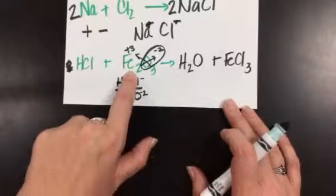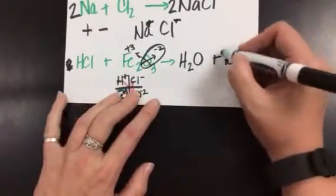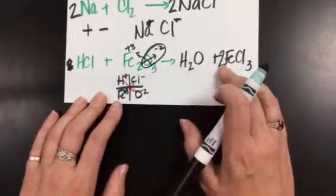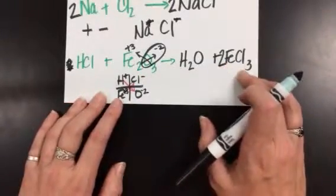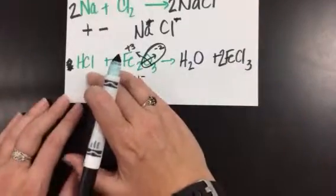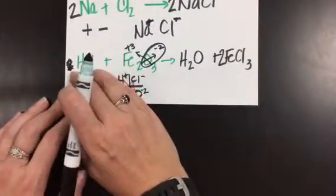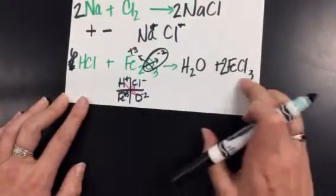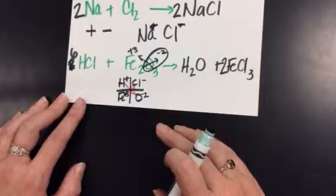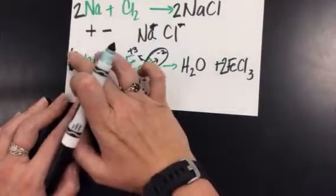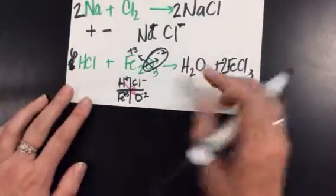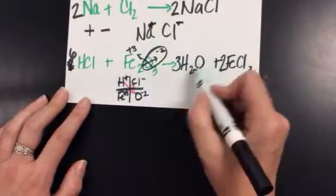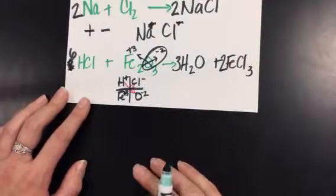Here I have two irons, so I need two irons over here. If I put a two out front of FeCl₃, that gives me two irons and two irons. That now gives me six chlorines, so I need six chlorines on the other side — a far cry from the two I started with — so I put a six in front of HCl. That gives me six chlorine and six chlorine — that part's balanced. Now I have six hydrogen, and I need six hydrogen over here. Three times two gives me six, so I put a three in front of H₂O. I have three oxygen and three oxygen. Everything's balanced.